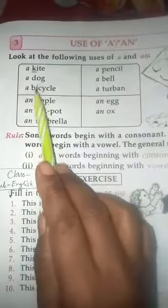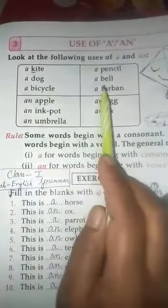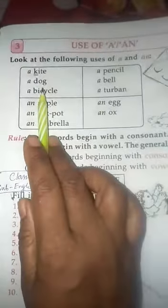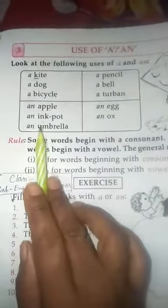So these words pencil, dog, kite, bicycle, bell, turban all start with consonants. That's why we are using a. And these apple, ink pot, umbrella, egg, ox all start with vowels, that's why we use an.